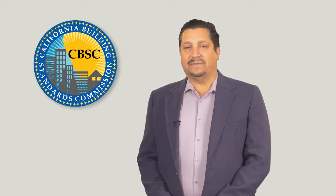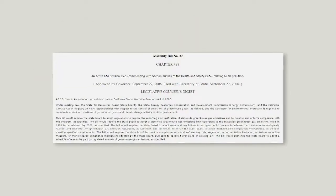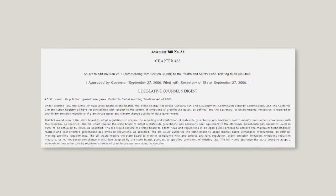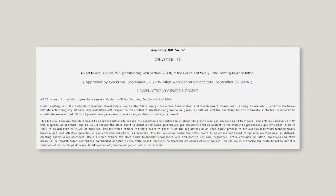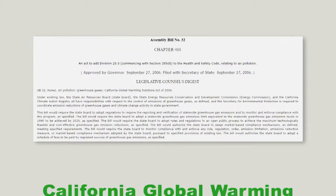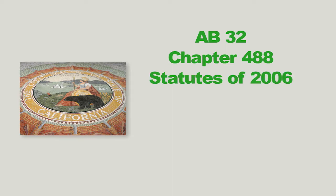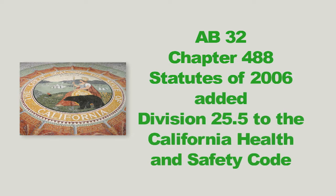The history of Cal Green, which is the first-in-the-nation green building standards code, is relatively short but very significant. It began in 2007 when CBSC was directed to develop green building standards in an effort to meet the goals of California's landmark initiative, Assembly Bill 32, known as the California Global Warming Solutions Act.